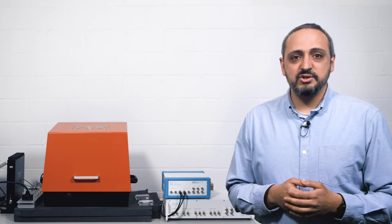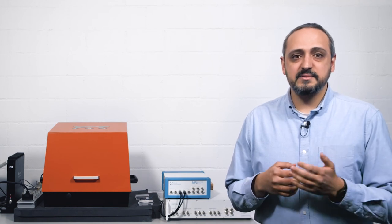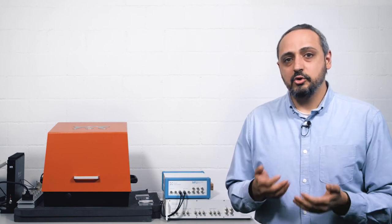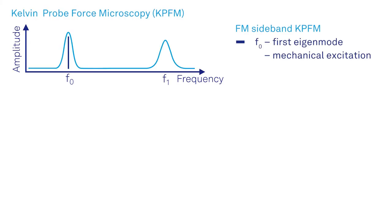To balance the limitations of AM-KPFM and FM sideband KPFM, a good compromise is FM heterodyne KPFM. The electrical excitation frequency is tuned so that the sideband matches the second eigenmode. Since it is at resonance, the signal-to-noise ratio improves while keeping the force gradient sensitivity.